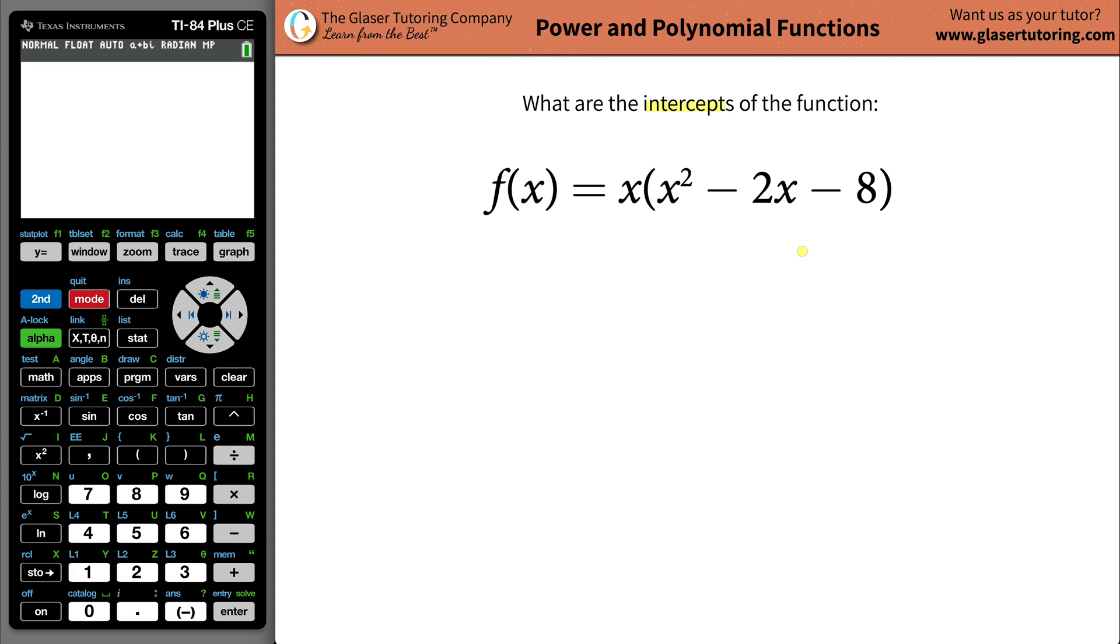What are the intercepts of the function f(x) equals x times x squared minus 2x minus 8? Alright, so first thing is you have to understand what it means by intercepts.